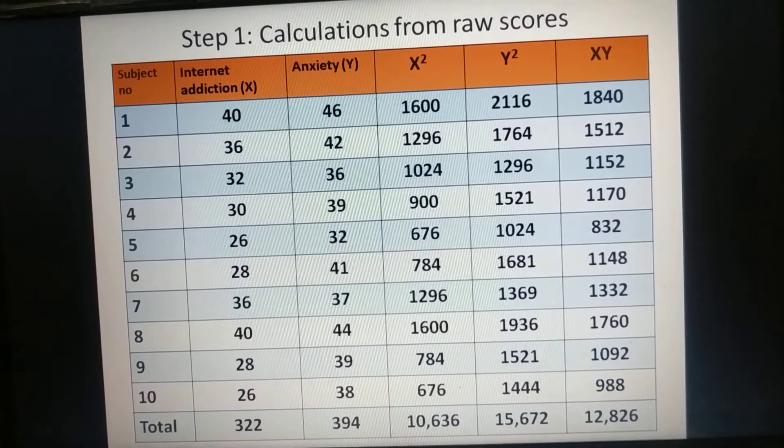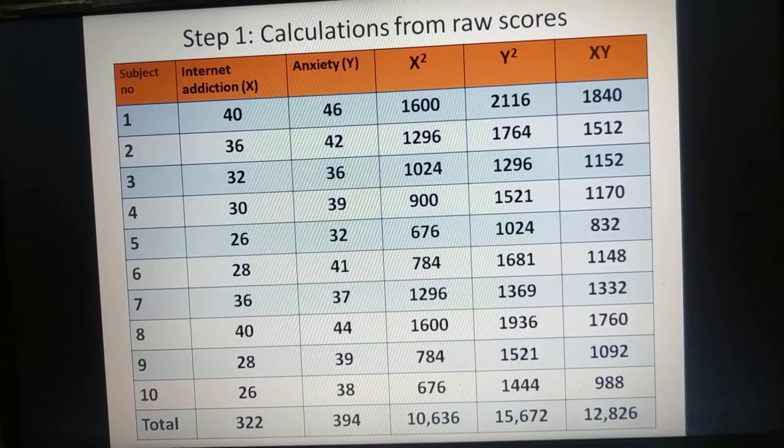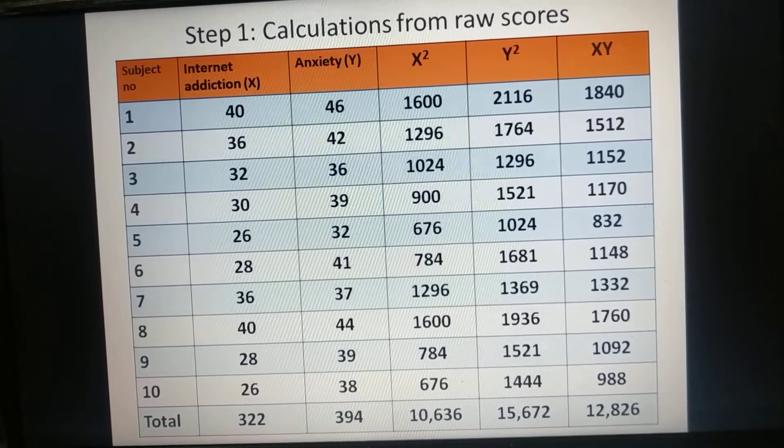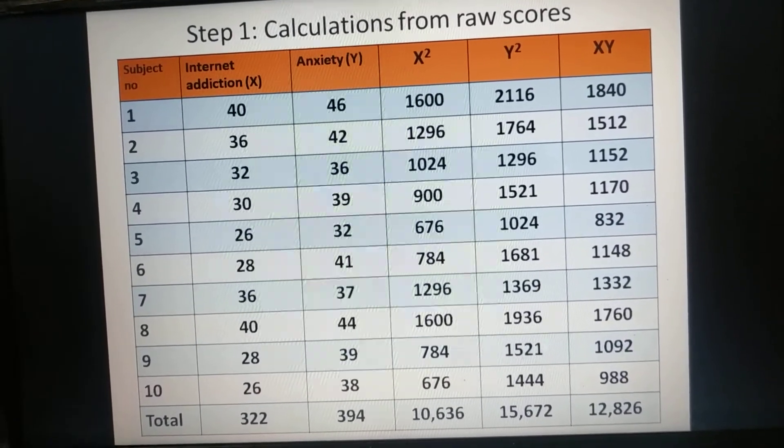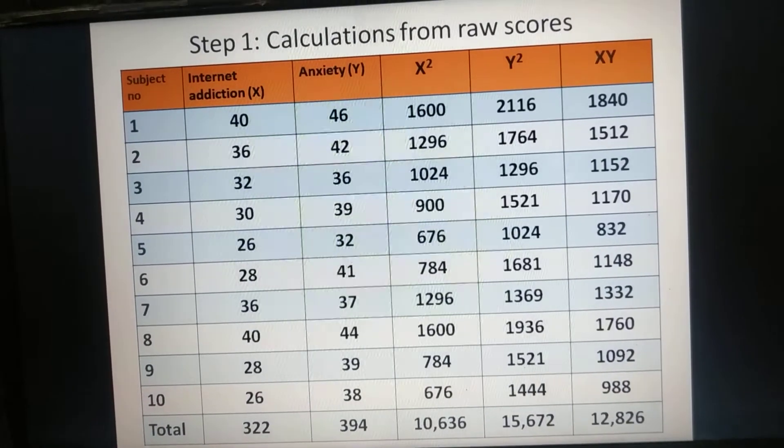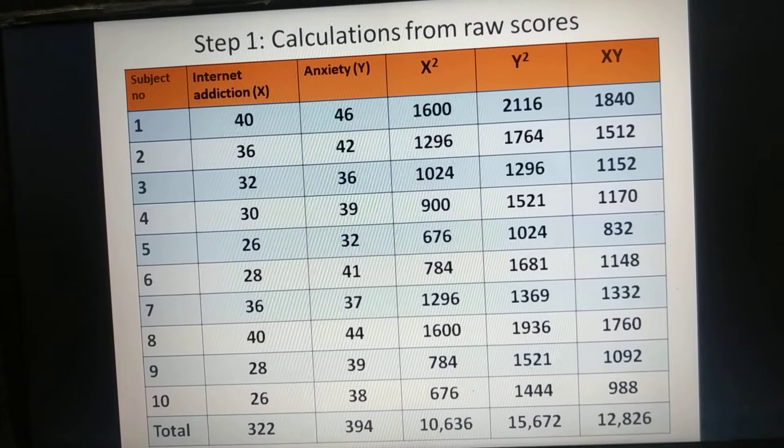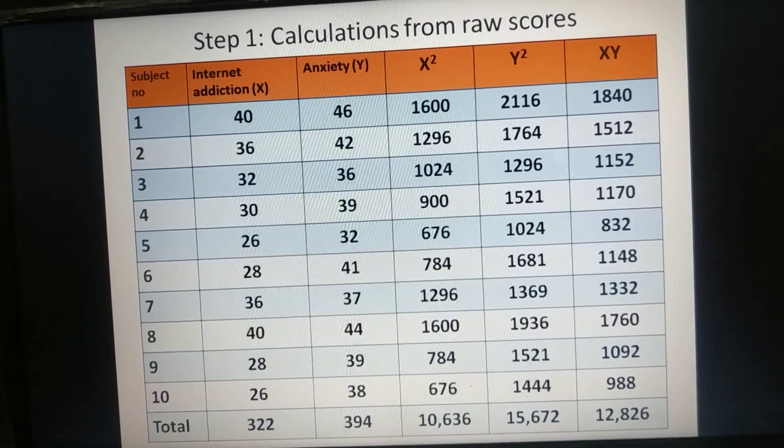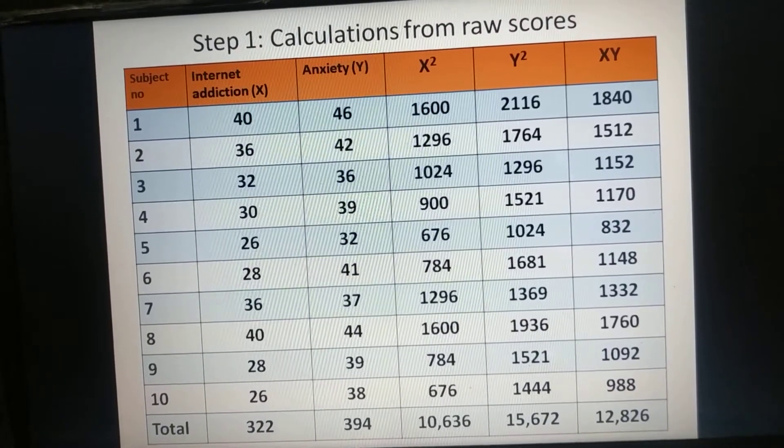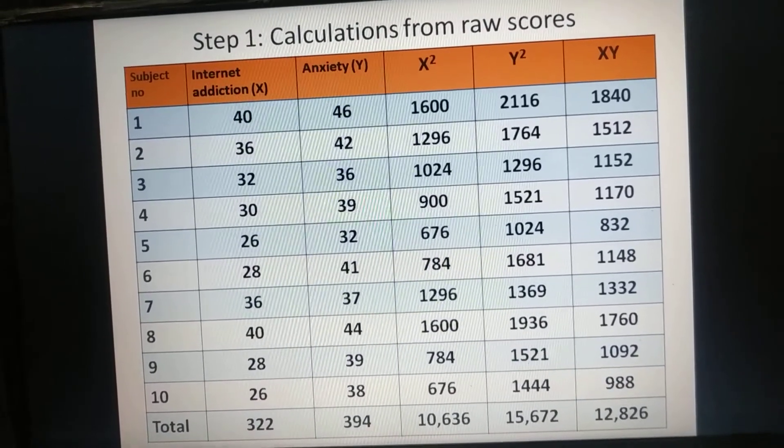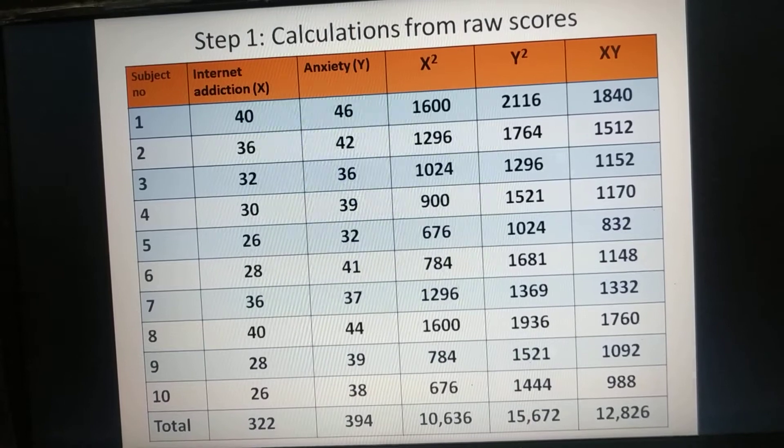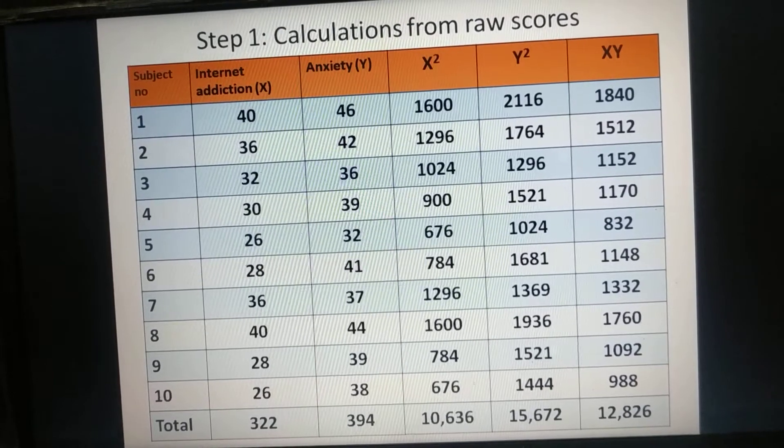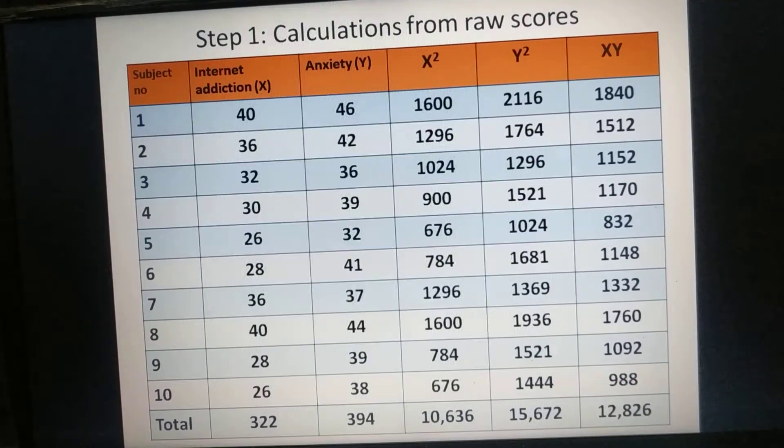Next add values of anxiety i.e. Y, total is 394. Find square of each score of X such as 40 whole square 1600, 36 whole square 1296 and at the end add all values that comes 10636. Similarly find square of each score of Y and add all values. Total score comes 15672.